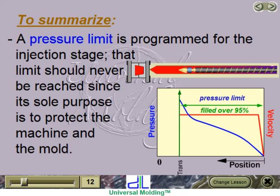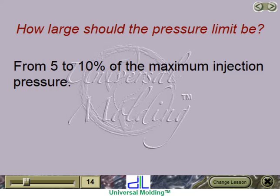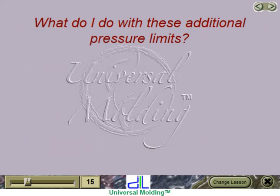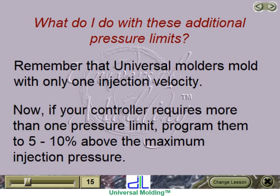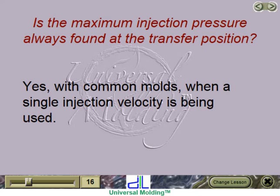A pressure limit is programmed for the injection stage. That limit should never be reached, since its sole purpose is to protect the machine and the mold. How large should the pressure limit be? From 5 to 10% above the maximum injection pressure. Some controllers are equipped with more than one injection pressure limit — one for each injection velocity. Since universal molders mold with only one injection velocity, if your controller requires more than one pressure limit, program them all to 5 to 10% above the maximum injection pressure. The maximum injection pressure is always found at the transfer position when using a single injection velocity with common molds.